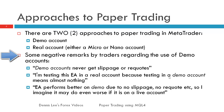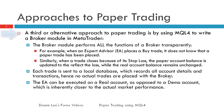Below are some negative remarks by traders regarding the use of demo accounts. A third or alternative approach to paper trading is by using MQL4 to write a broker module in MetaTrader. The broker module performs all the functions of a broker transparently. For example, when an expert advisor places a buy trade, it does not know that a paper trade has been placed instead. Similarly, when a trade closes because of its stop loss, the paper account balance is updated to reflect the loss, while the real account balance remains unchanged. Each trade is sent to a local database which records all account details and transactions. Hence, no actual trades are placed with the broker.